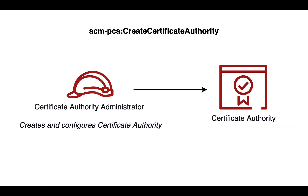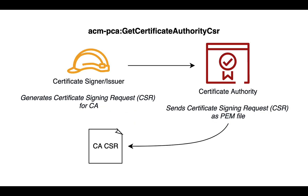The first step to create a certificate authority is using the create certificate authority command, which is run by the certificate authority administrator. Next, the certificate signer and issuer role will use the get certificate authority CSR command to retrieve a CSR from the certificate authority, which is delivered as a PEM file.